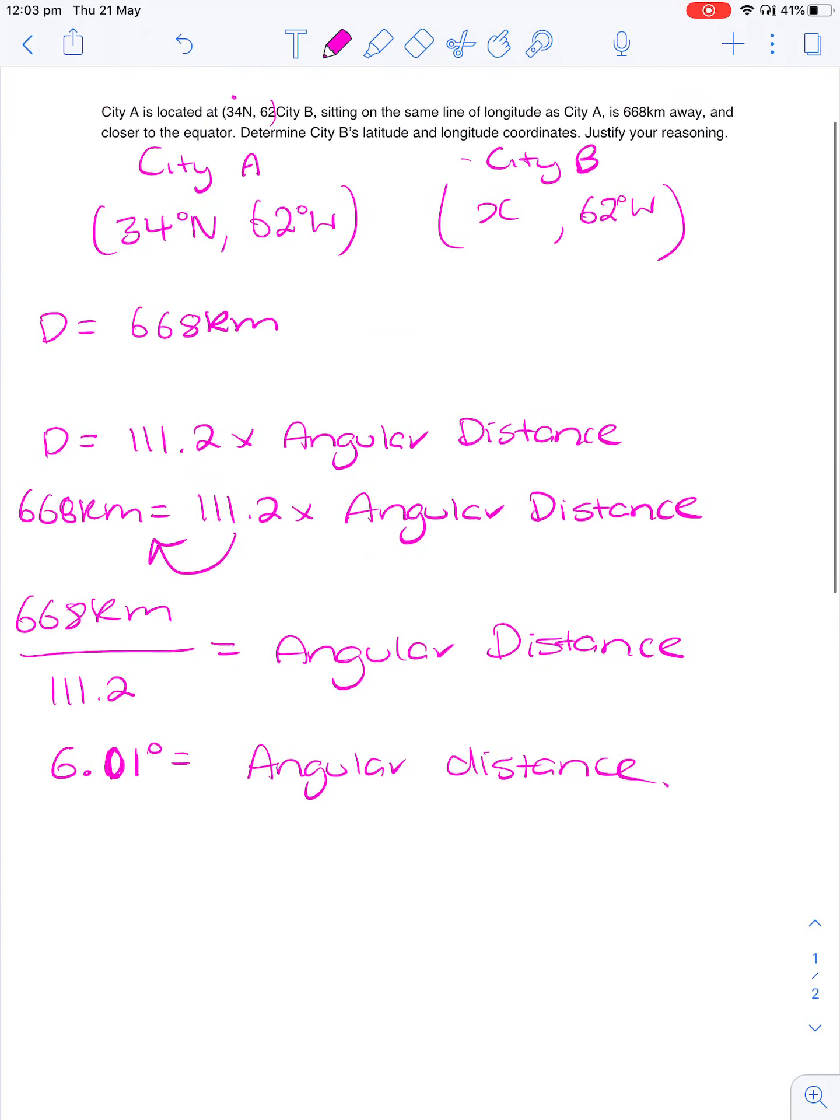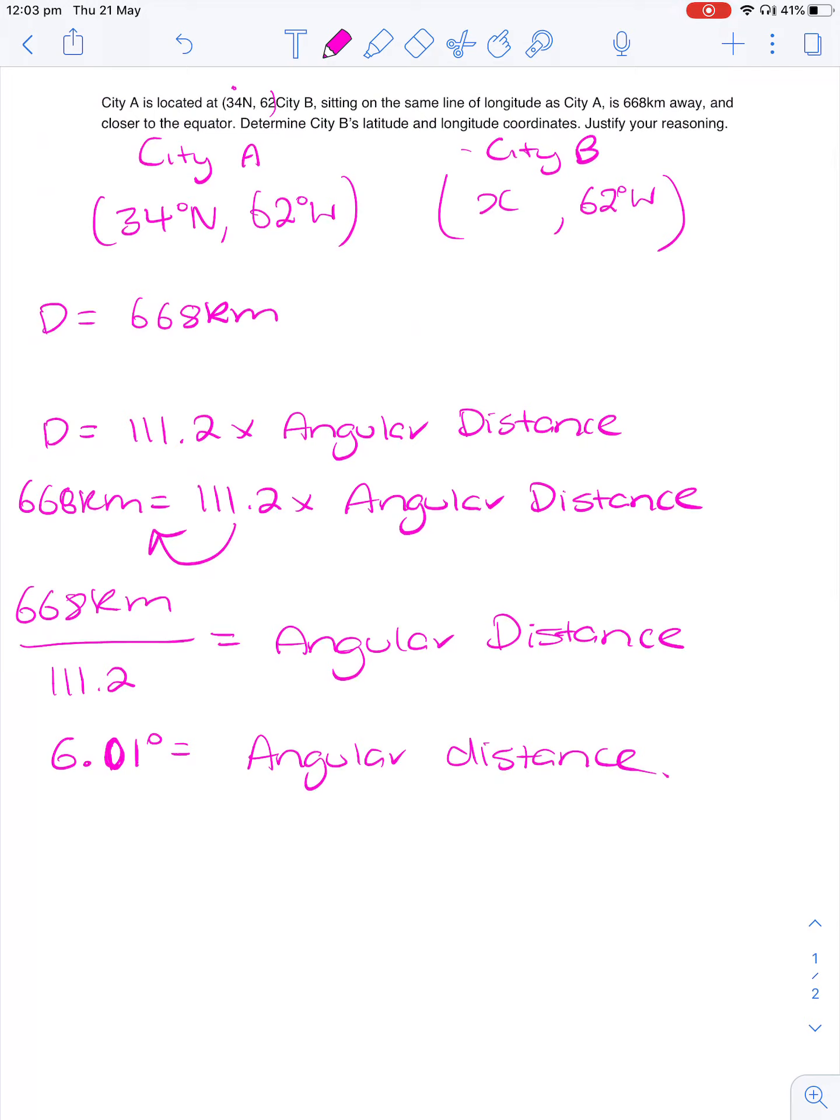Now another thing that you need to consider, they've told you that City B is sitting on the same line of longitude as City A and is 668 kilometers away, and it's also closer to the equator. Because it's closer to the equator, we have to use the latitude from City A and subtract from the angular distance that we've just found. And that's going to give us our latitude coordinate. So City B's coordinates are going to be 28 degrees north and 62 degrees west.